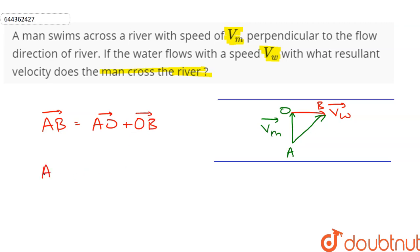The magnitude of AB vector, which is the resultant velocity, will be equal to square root of vm squared plus vw squared, because the angle between these two vectors is 90 degrees.